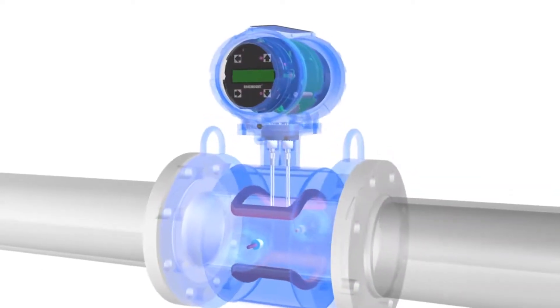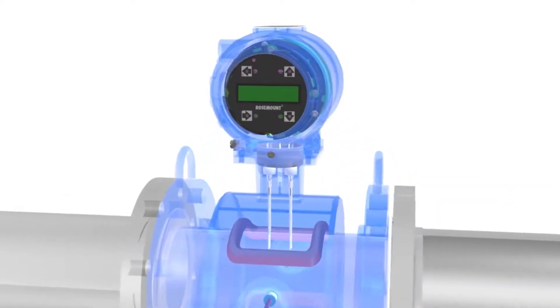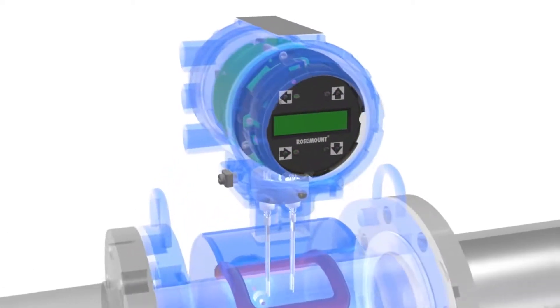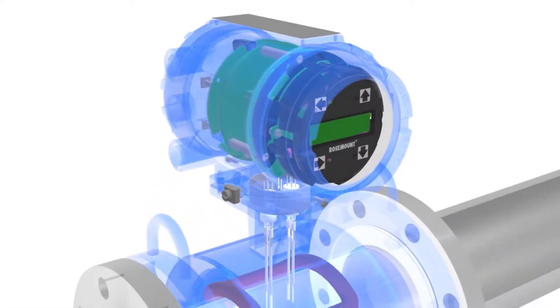The transmitter takes the measured voltage generated by the sensor, converts the voltage into a flow measurement, and transmits that flow measurement to a control system.